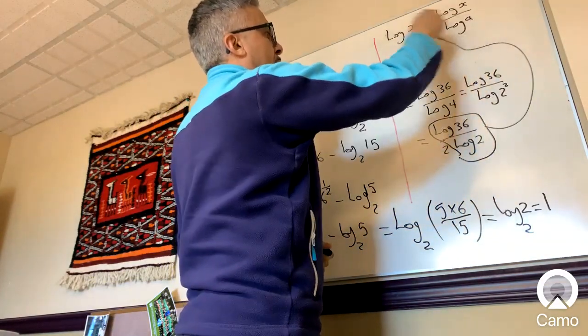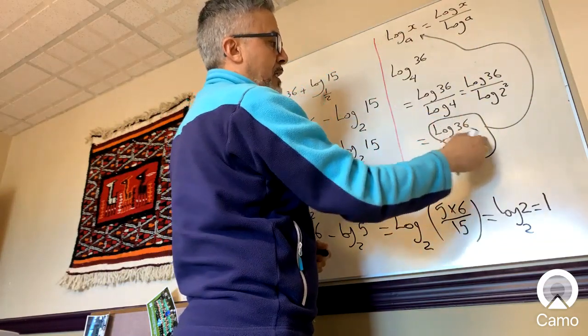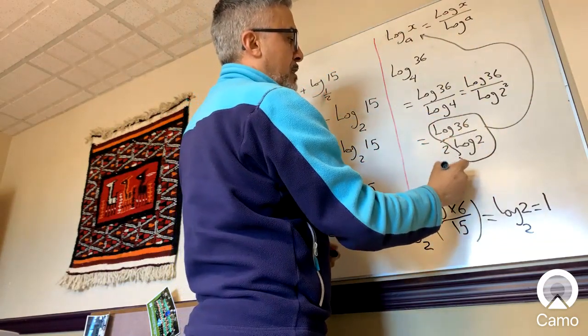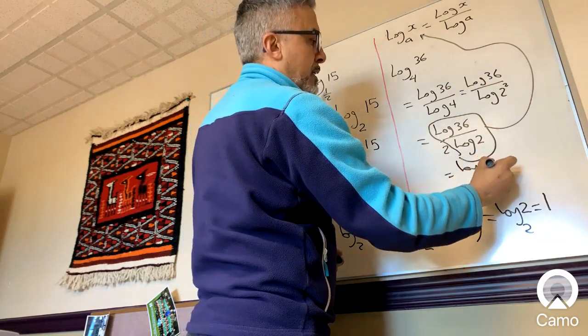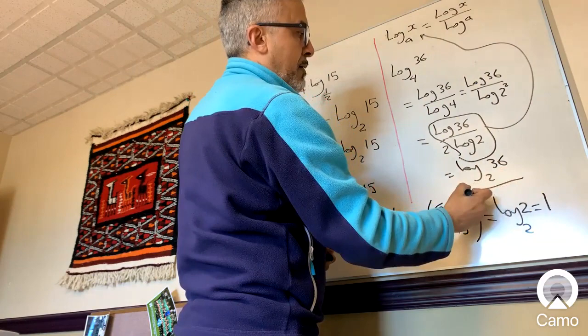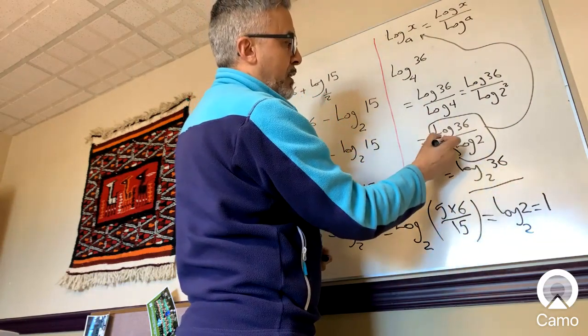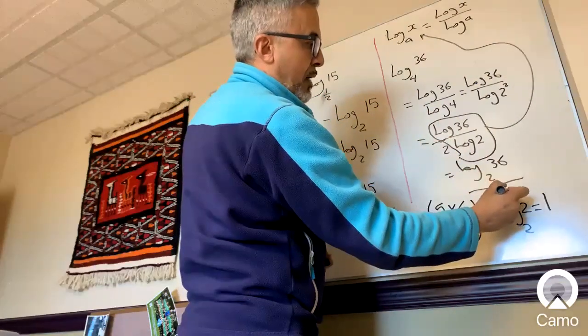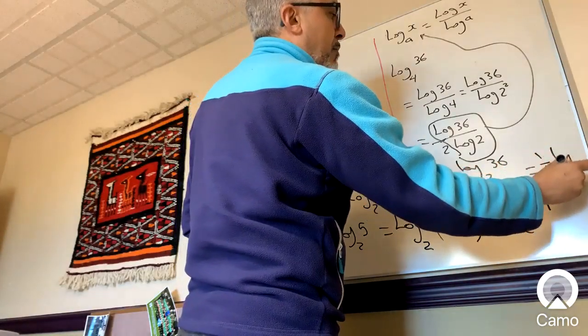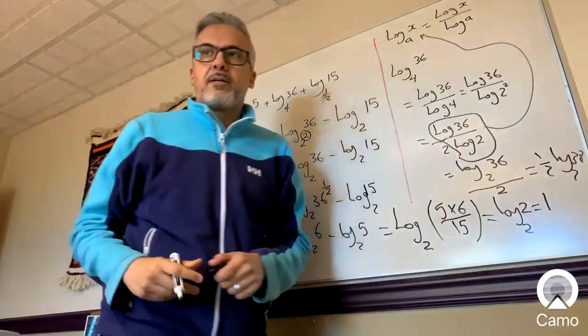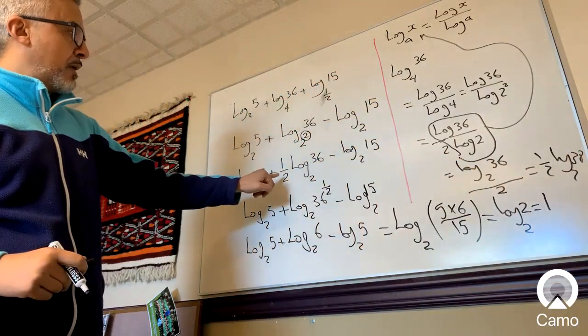Now you see this here, I could take it back to this, so going from here to there. So log 36 divided by log 2, I could just change it to log base 2 of 36, which is this, and this 2 here is still underneath the fraction, so it goes right there, and that's what makes it one half log base 2 of 36, and that's how we got that.